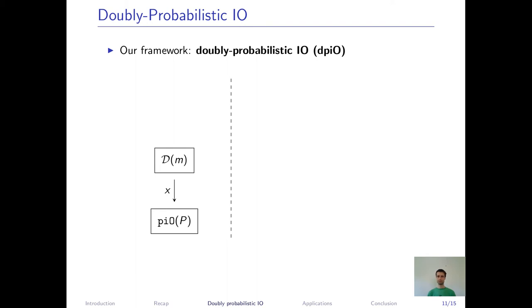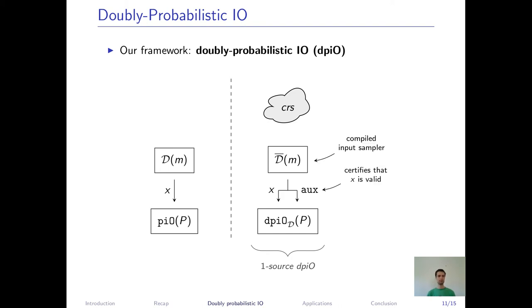Okay, what's the difference to normal P.I.O.? In contrast to P.I.O., we are now in the CRS model. And we need to compile the input sampler, such that it additionally outputs some auxiliary information, which we will use to verify that the produced input X is actually valid in some sense, where valid means that it is sparsifiable with the ELF.